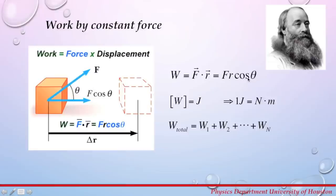which is equal to F·r·cosine(θ). F here is the magnitude of the force applied to an object, r is the displacement of the object, and angle θ is the angle between the force and the line of displacement. Note that work is a product of two magnitudes, and for this reason it is a scalar. The unit for work is the joule, named after UK physicist James Prescott Joule. One joule is equal to newton times meter.